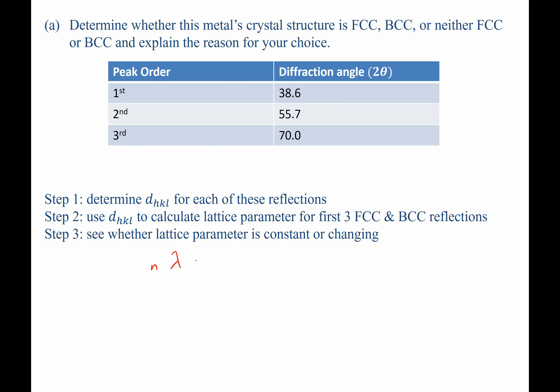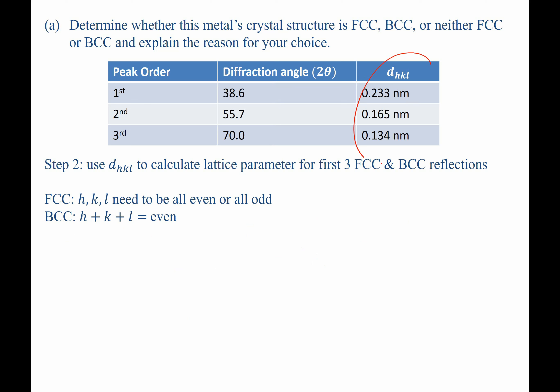Bragg's Law states: N times lambda equals 2 DHKL times sine of theta. Since it's first-order reflection, N equals 1, so we can ignore it and rearrange for DHKL. We calculate the DHKL values for the first three reflections and add them as a new column to our table, completing Step 1.